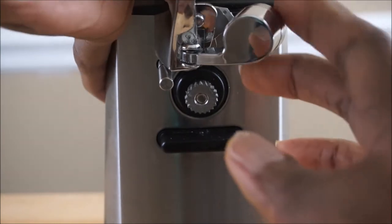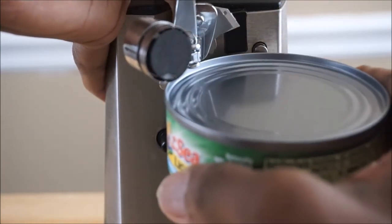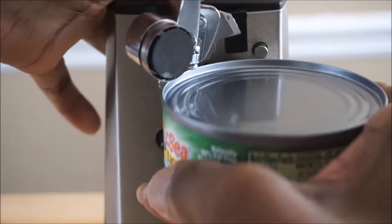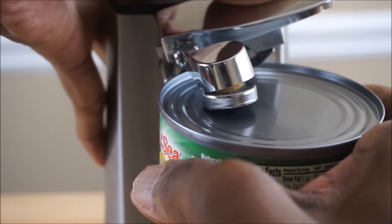Now I'm going to show you how to open this can of tuna. I'm going to lift the lever and move the magnet out of the way. I'll place the can directly under the lever and make sure the magnet grips onto the top of the can.